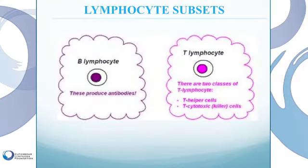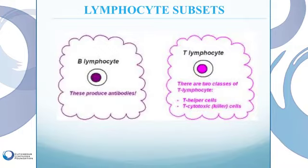Lymphocytes are categorized into two different classes. B-cell lymphocytes, or B-lymphocytes, are those that make antibodies. The other major category are T-cells, further subcategorized into helper T-cells and killer T-cells. The helper T-cells help in initiating immune responses, and the killer T-cells are involved in eliminating germs and different proteins that the body needs eliminated. The term cutaneous T-cell lymphoma refers to a lymphoma of T-lymphocytes that occurs on the skin.